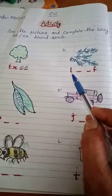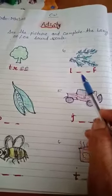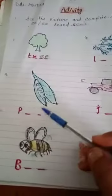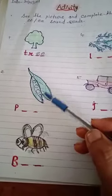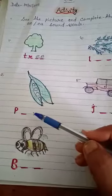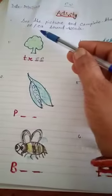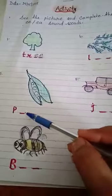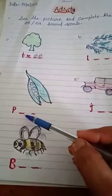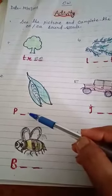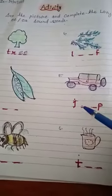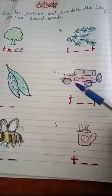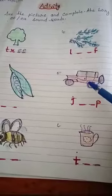And next, see the picture of pea and complete their word, E-A sound. So read this, P, okay. And next, G, you have to see the picture of jeep.